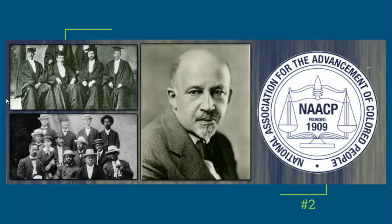They begin with W.E.B. Du Bois, who was a civil rights leader from the late 1800s into the early 1900s. He believed in the talented tenth — that the most talented, most intelligent, most capable 10% of the African-American population should go get a college education and become doctors, lawyers, and engineers, and show that they are just as capable as whites. He was the first African American to get a doctorate from Harvard University, and he founded the NAACP in 1909, a civil rights organization still around today.